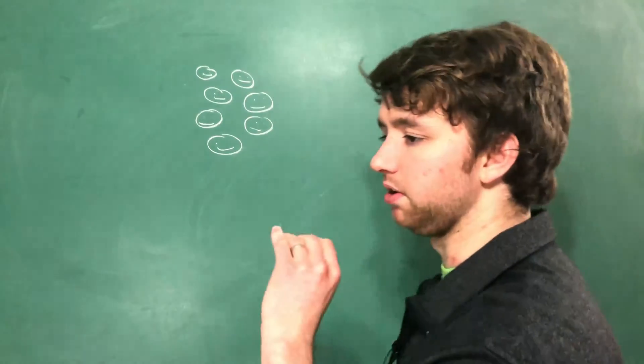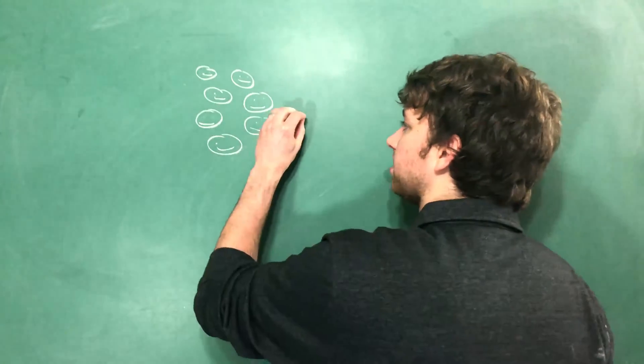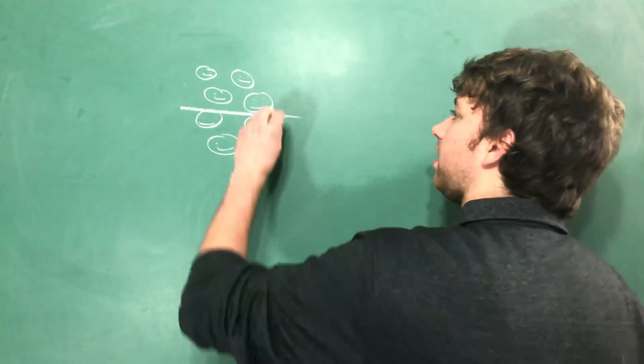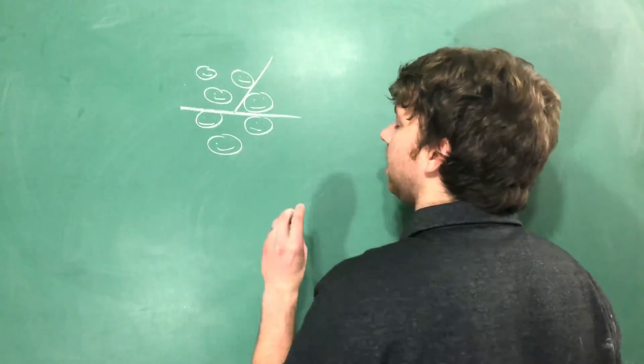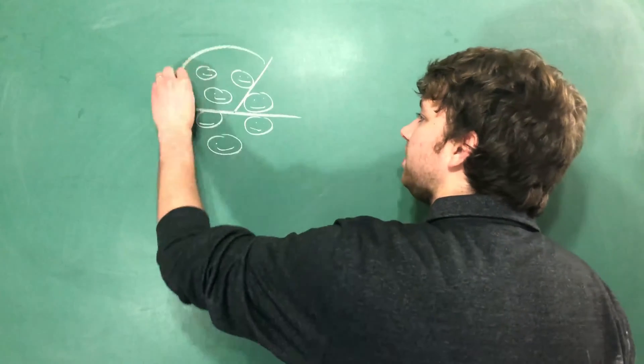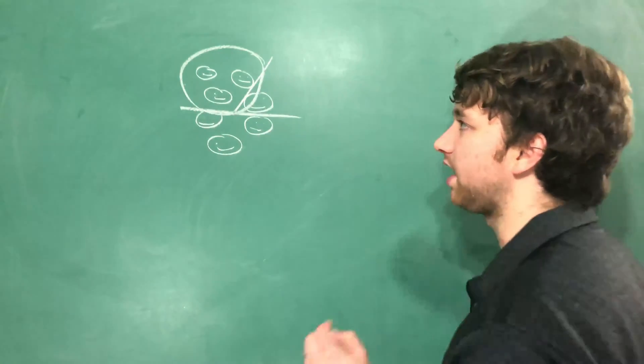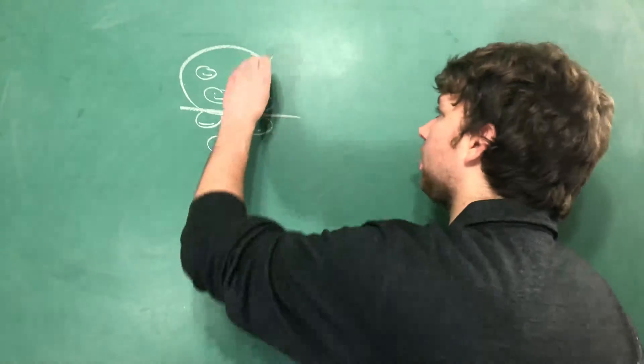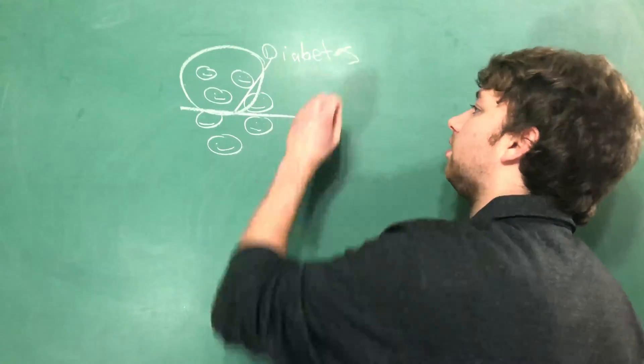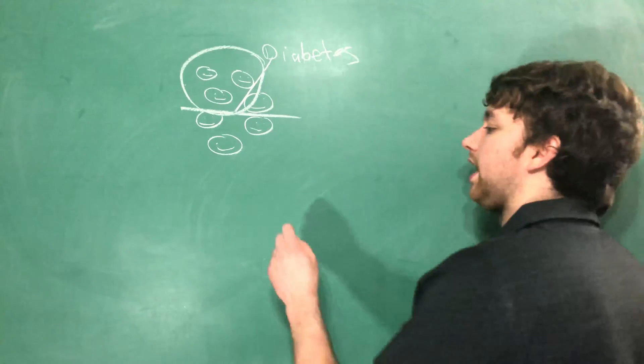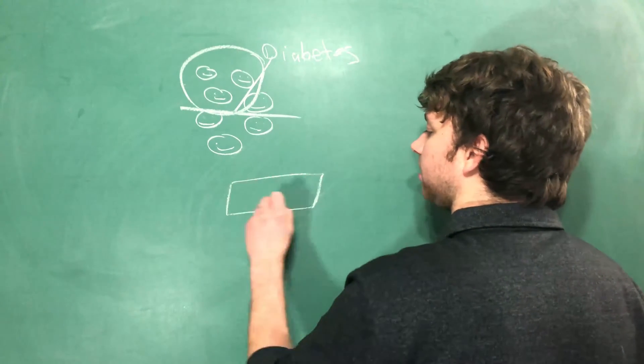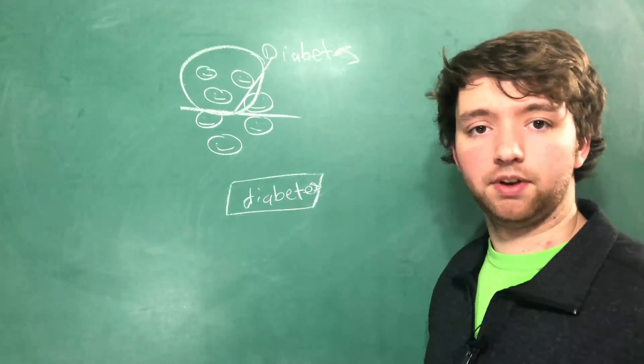So imagine we have a bunch of people and we start building our decision tree and we split the data and then we split the data again, and all three of these people have the same target feature value. Let's say they all have diabetes. Well then we make that a leaf node that would be diabetes and then we return.